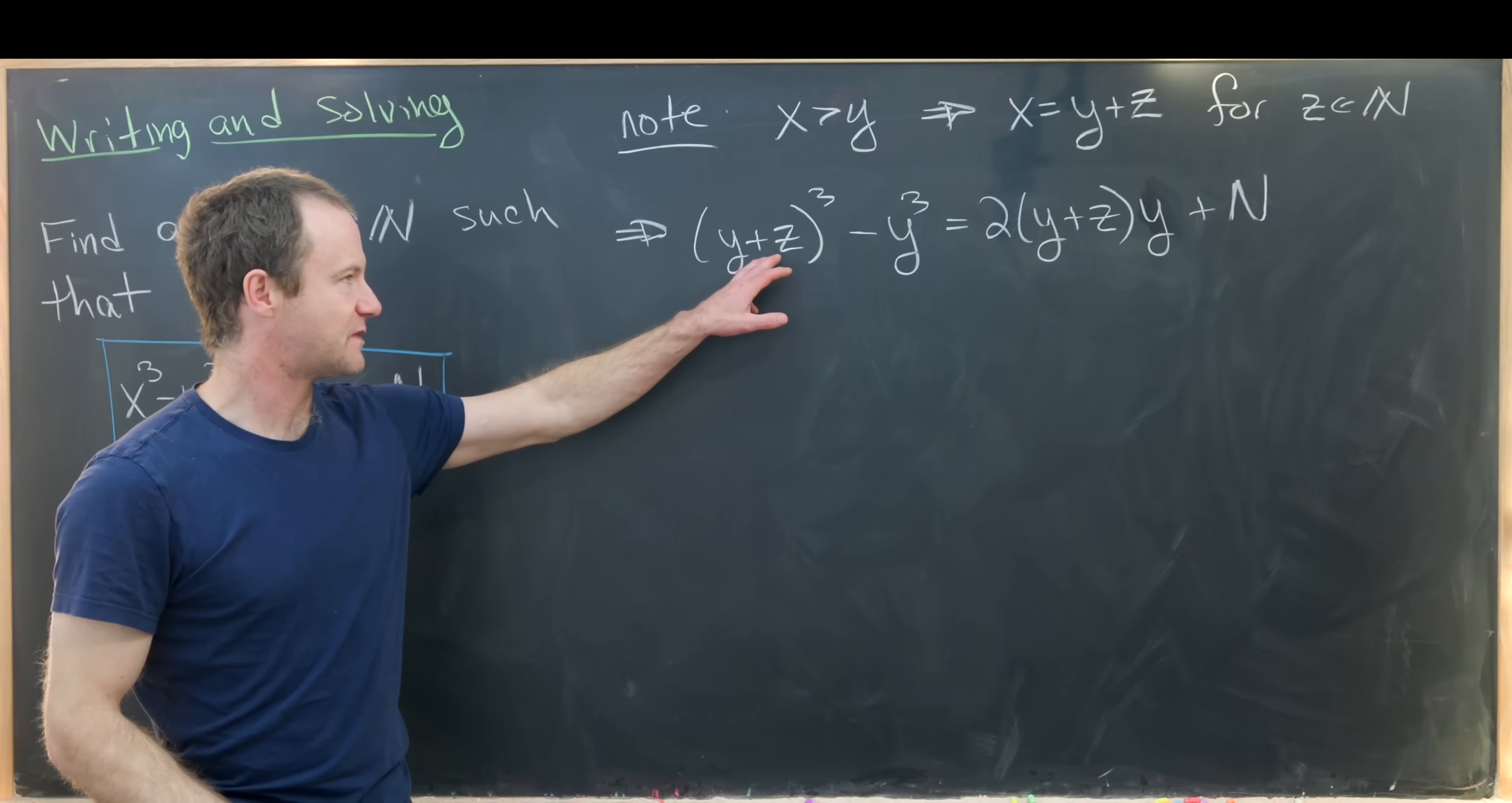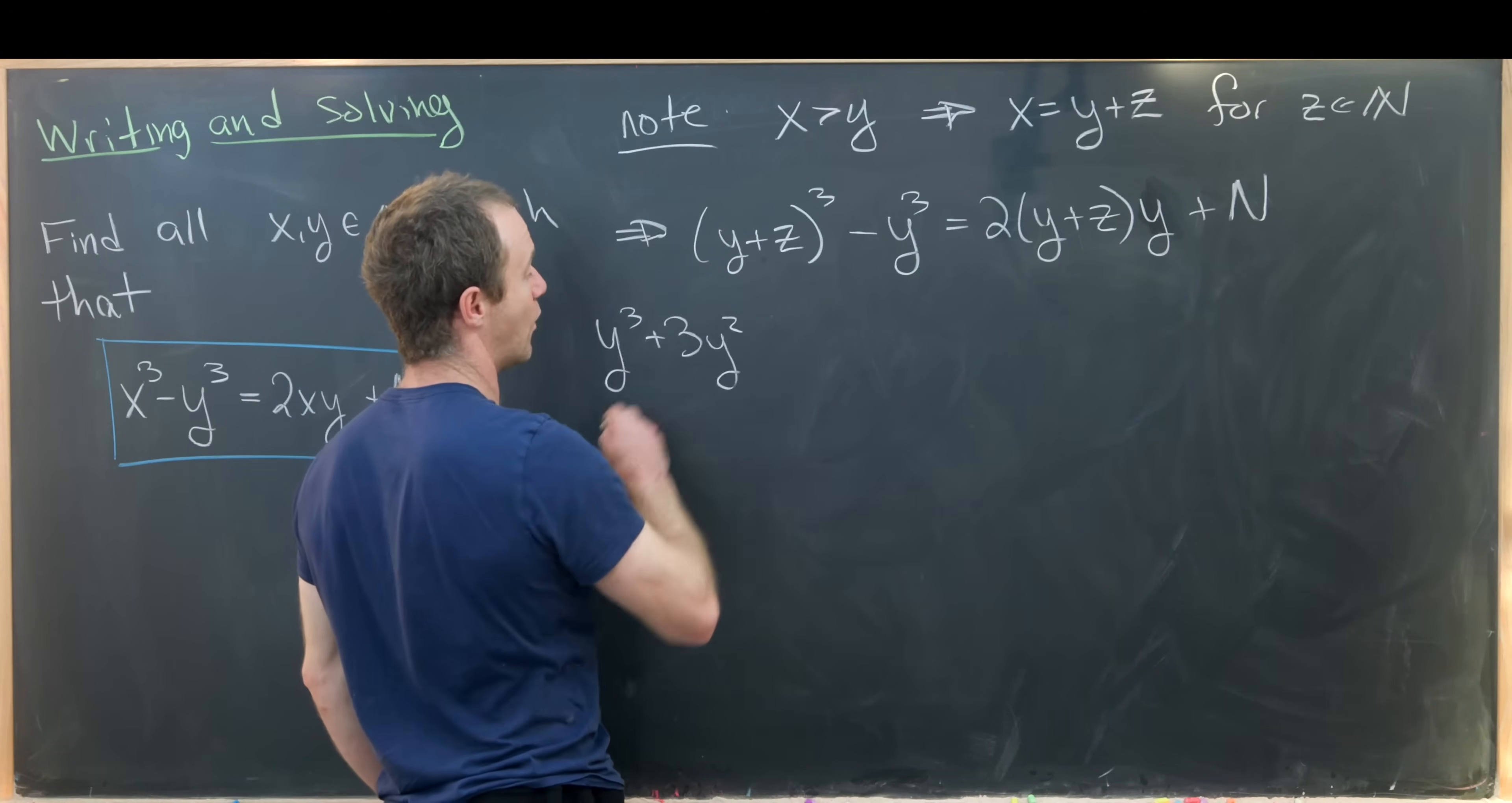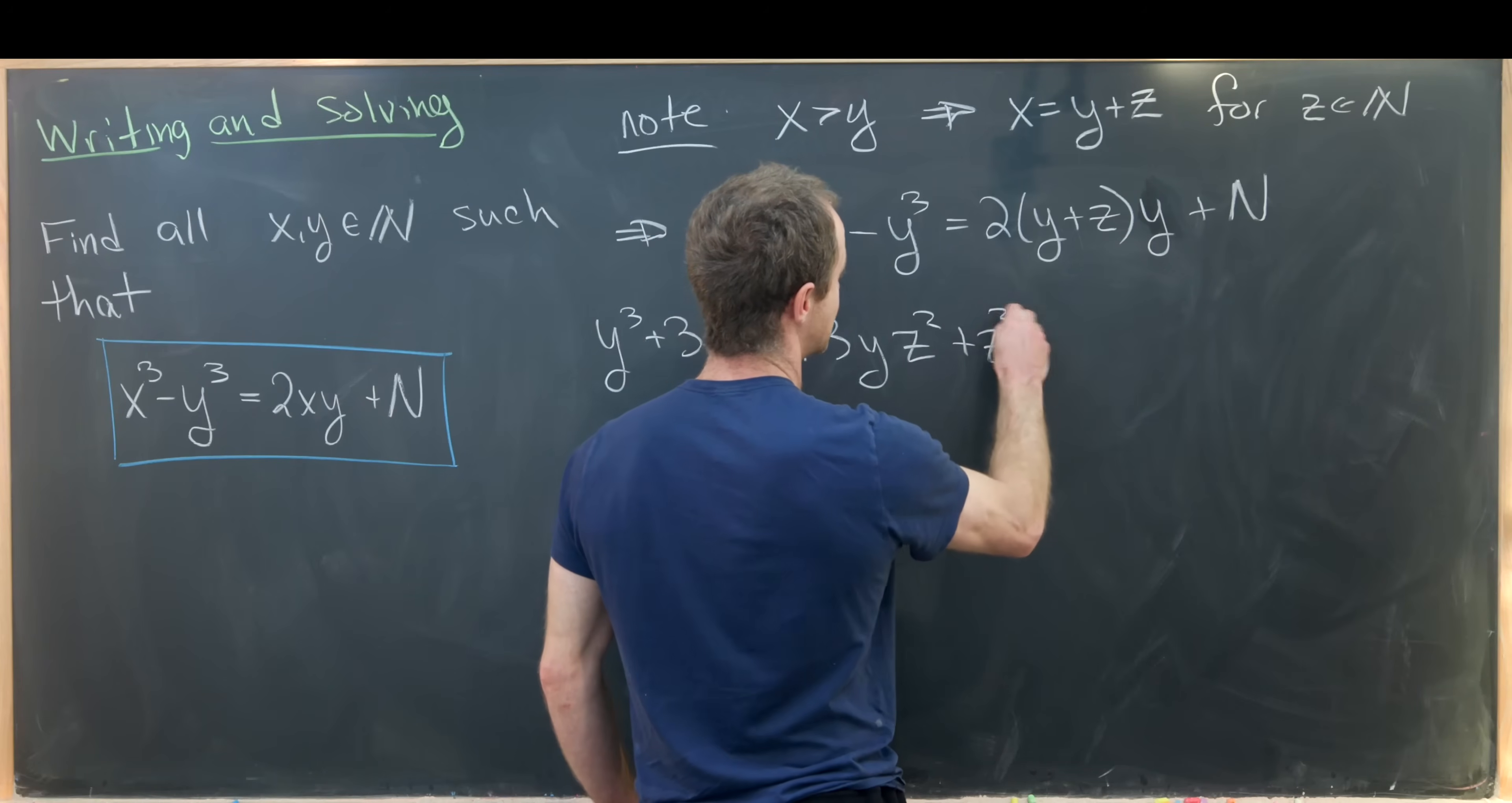But now let's multiply this out. We can multiply this out using a standard binomial expansion. So that'll give us y³ + 3y²z + 3yz² + z³.